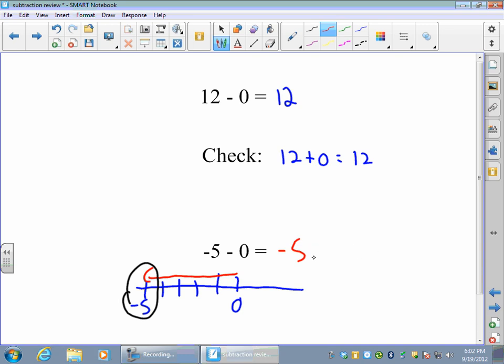And again, you can check that by adding your answer plus what you subtracted. Negative 5 plus 0, that definitely is negative 5. When you add 0, it stays the same. So that's the right answer for sure.